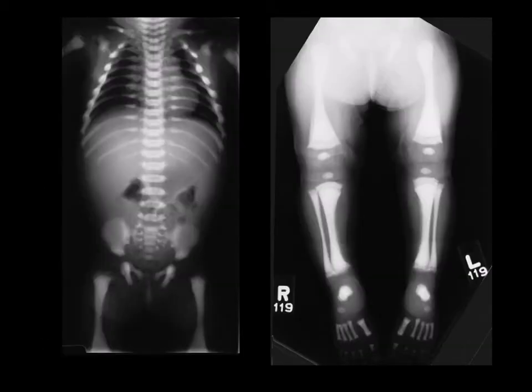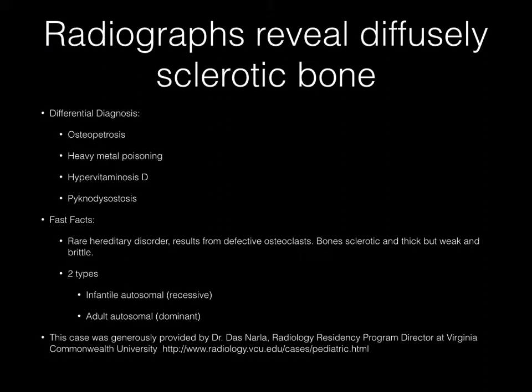Now pause your media player. The finding on these radiographs is diffusely sclerotic bone. Your differential diagnosis should include osteopetrosis, heavy metal poisoning, hypervitaminosis D, and pycnodysostosis, among others.